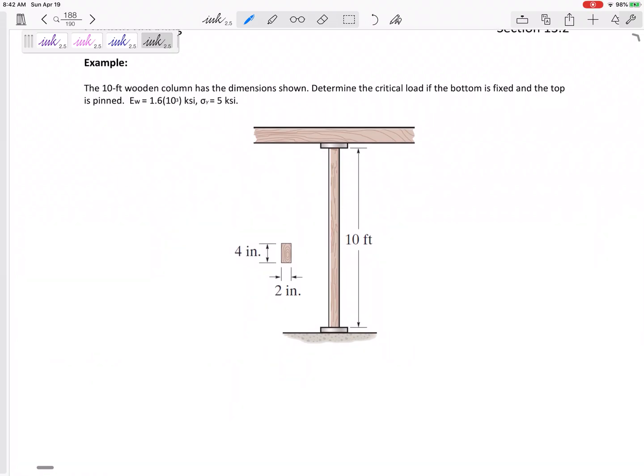All right, let's look at this one. Let's make sure it doesn't buckle. We've got a 10-foot wooden column. It has these dimensions right here to determine the critical load.